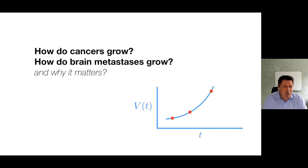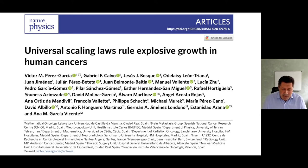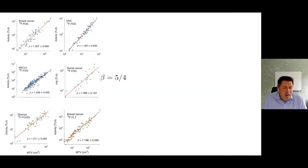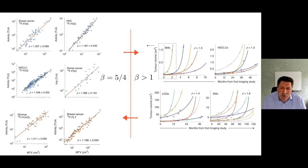Now let's move on to cancers and brain metastases, the topic of this talk. First, cancers in general. We published this paper where essentially we found that the allometric scaling laws in cancers are super-linear. So beta is larger than 1. That was quite surprising, but consistent for different types of cancers: breast cancers, head and neck cancer, non-small cell lung cancer, rectal cancer, gliomas, and so on.